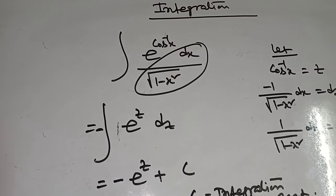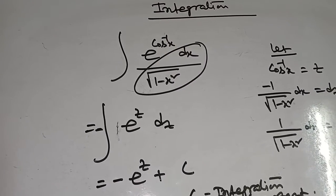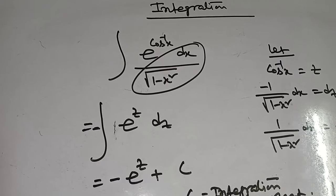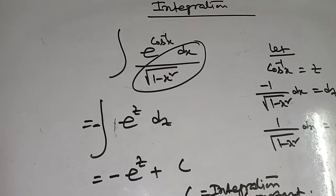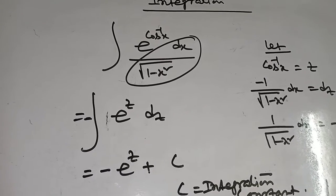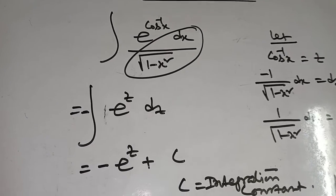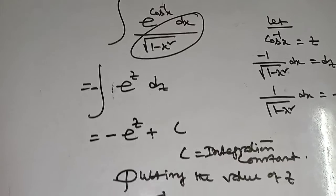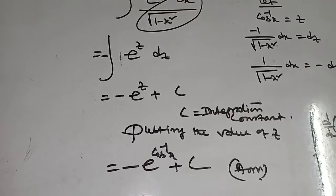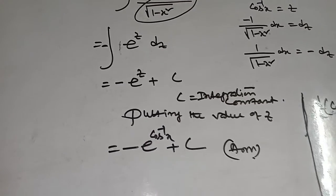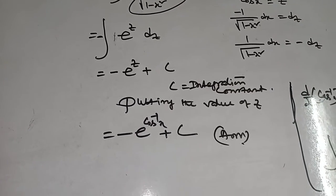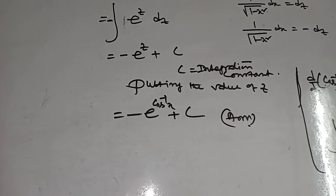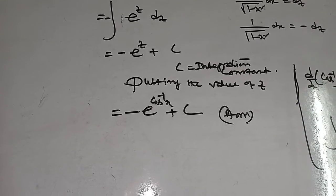Integration: this part equals minus dz, that means minus integration of e to the power z dz. Integration of e to the power z means e to the power z plus c, where c is the integration constant. Now put the value of z: the answer is minus e to the power cos inverse x plus c.